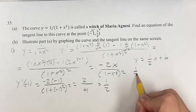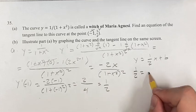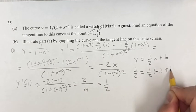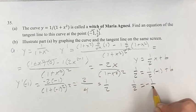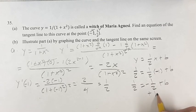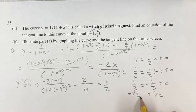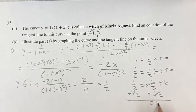So plugging in 1 half for y, negative 1 for x, we get 1 half is equal to negative 1 half plus b, adding 1 half to both sides.